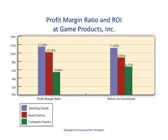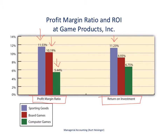These two sets of graphs show the profit margin ratio and the return on investment for each division. The first graph is for the profit margin ratio: sporting goods has 11.53%, board games is 10.19%, and the computer games division has 5.44%. These ratios do not include assets at all — we're only looking at profit as a percentage of sales. For return on investment, sporting goods has 11.23% ROI, board games has 8.93%, and computer games has 6.75%.